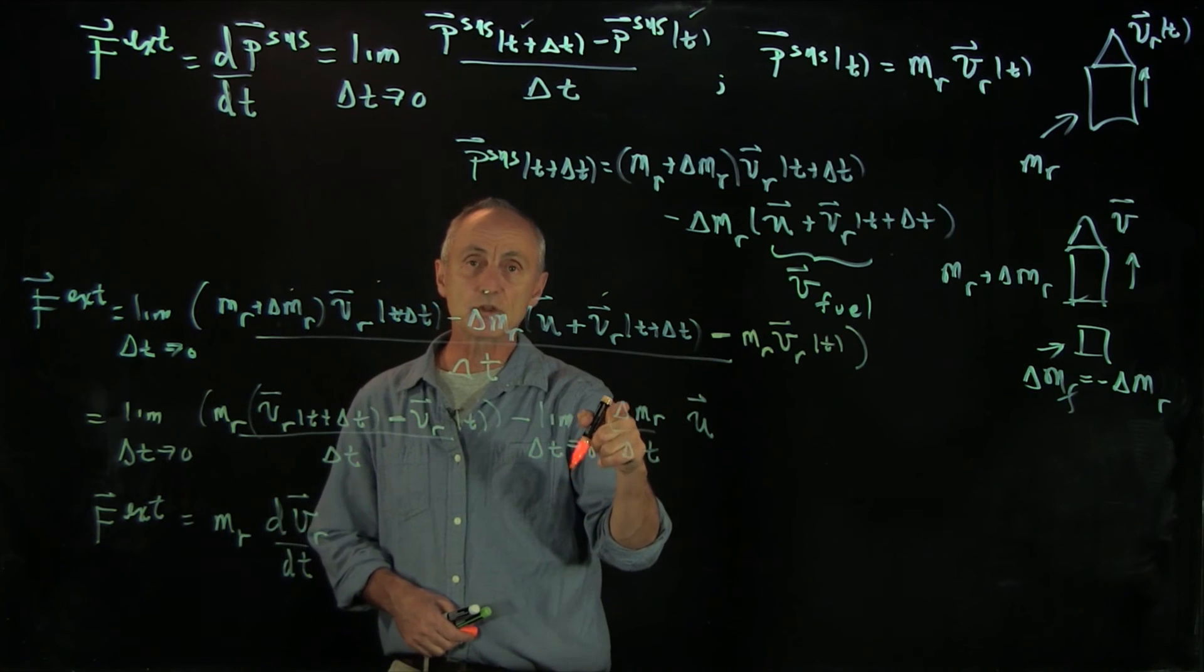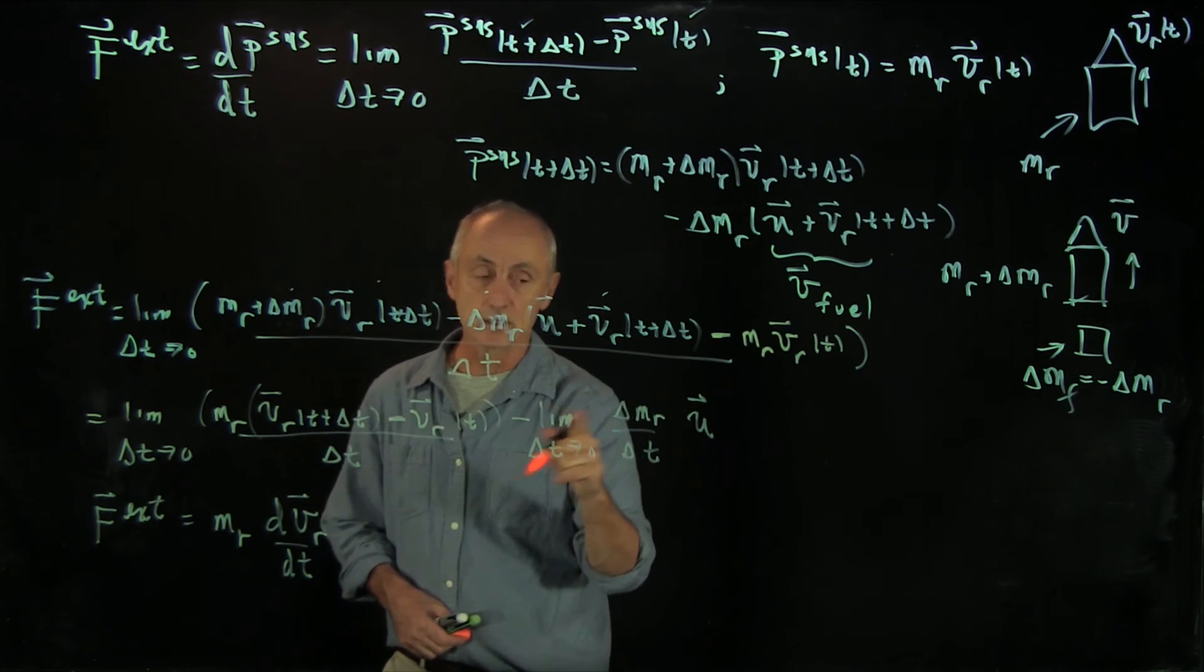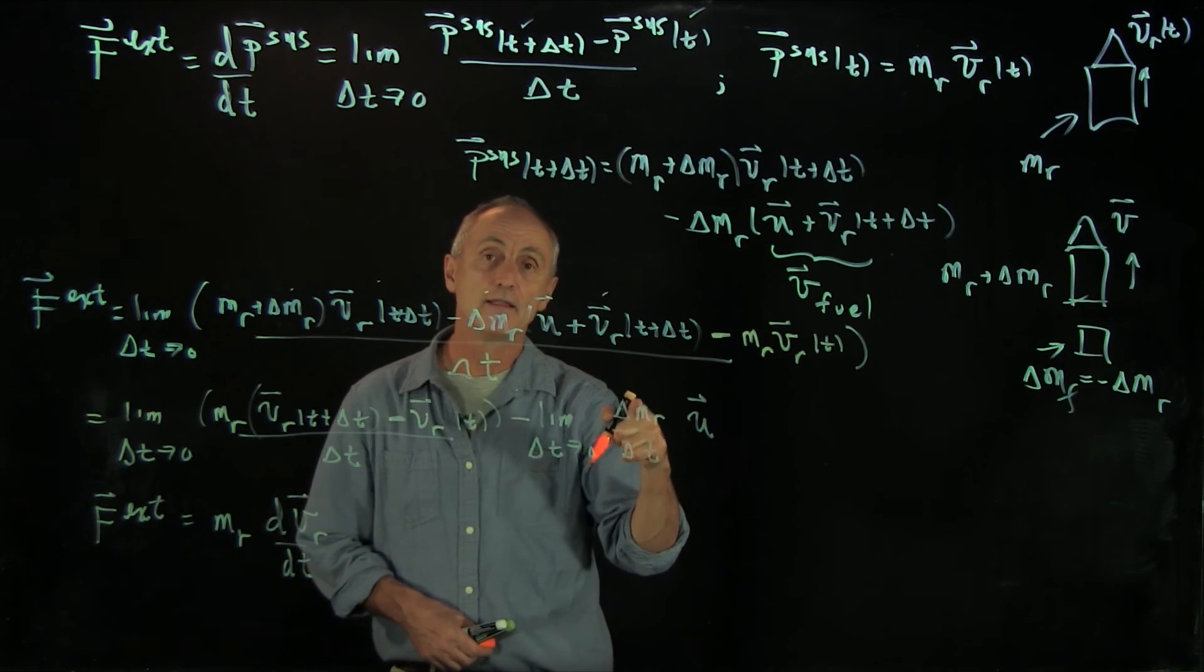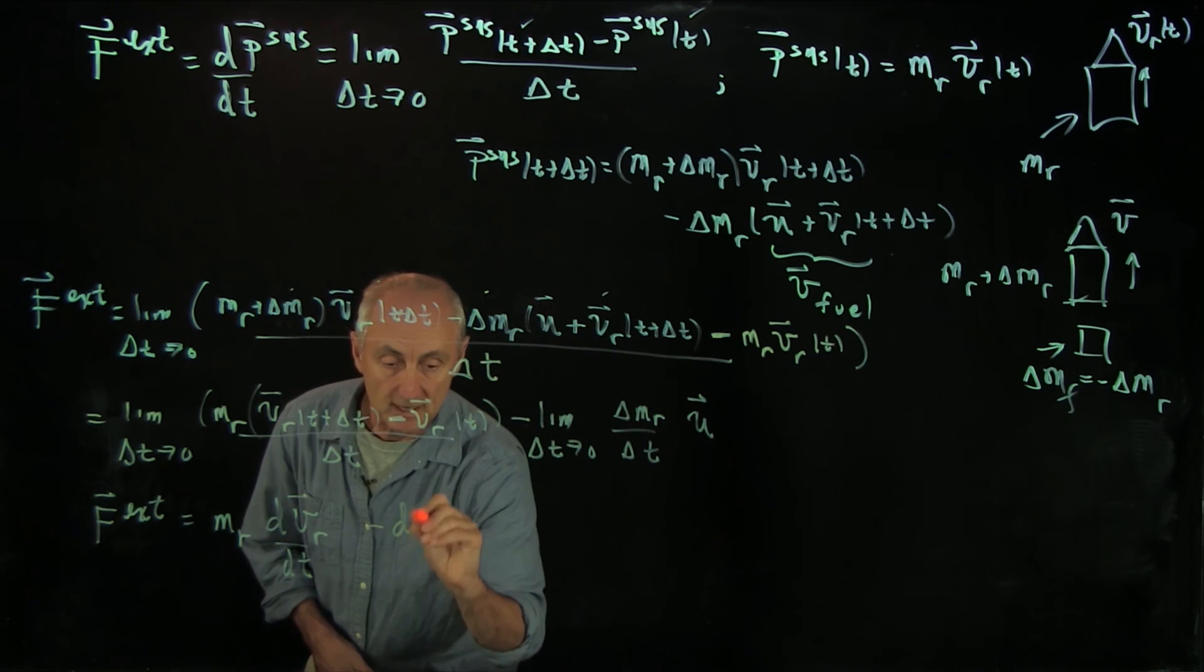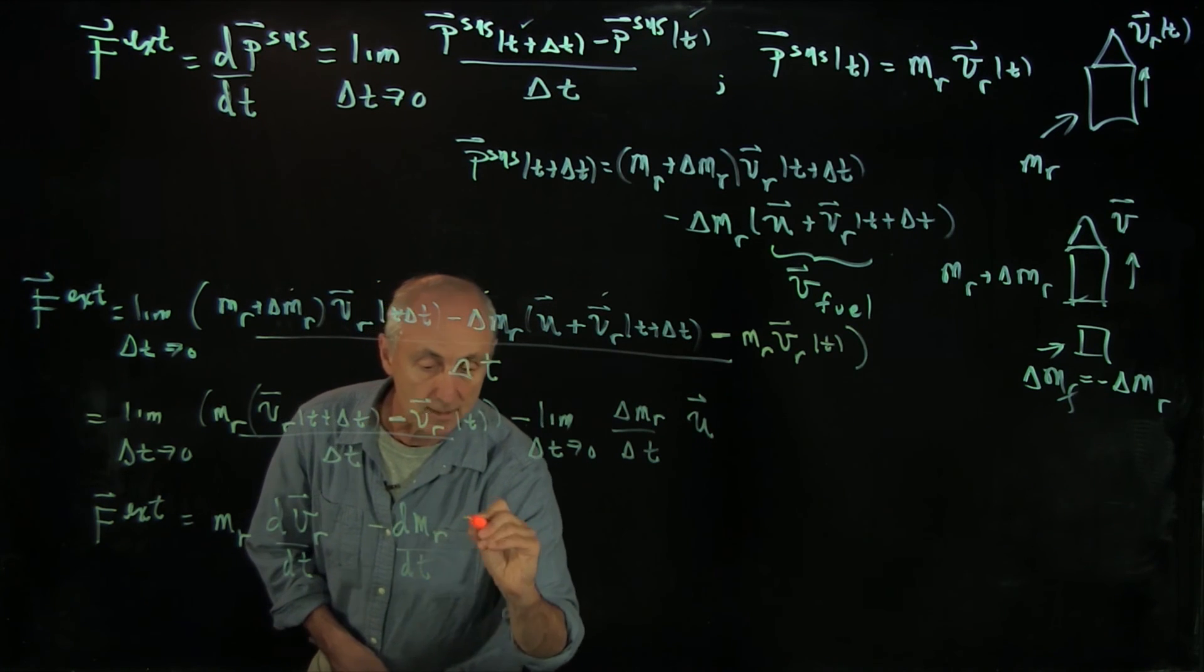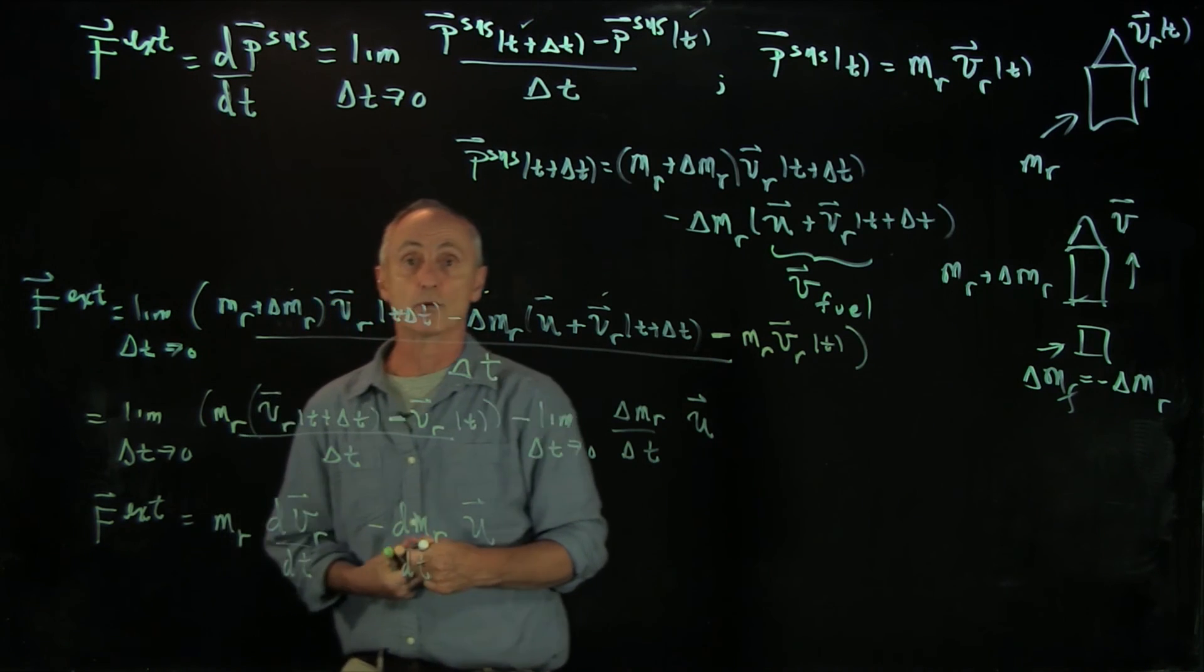And the second term, this is the rate that the fuel is changing in the rocket. This is rather the rate that the mass of the rocket is changing. So that's the derivative dmr dt times the relative velocity of the fuel with respect to the rocket.